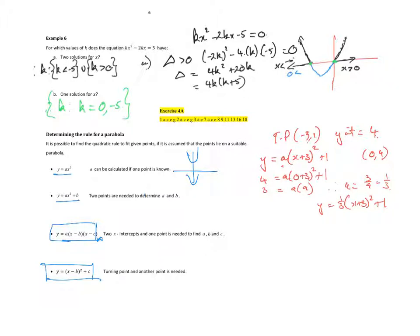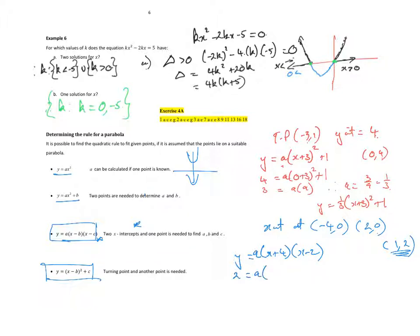If instead the x-intercepts are at negative 4, 0 and 2, 0, and it passes through the point 1, 2, we use intercept form: y equals a times x plus 4 times x minus 2. Substituting x equals 1, y equals 2: 2 equals a times 5 times negative 1, so 2 equals negative 5a, giving a equals negative 2 on 5. The equation is y equals negative 2 on 5 times x plus 4 times x minus 2.